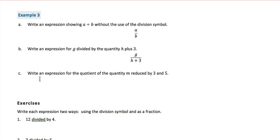And then if we write an expression for the quotient of the quantity m reduced by 3 and 5, please notice the wording. It's the quotient of the quantity m reduced by 3. This is all one phrase. We know that because it's followed by the word and. And tells us what the other number is in our problem.